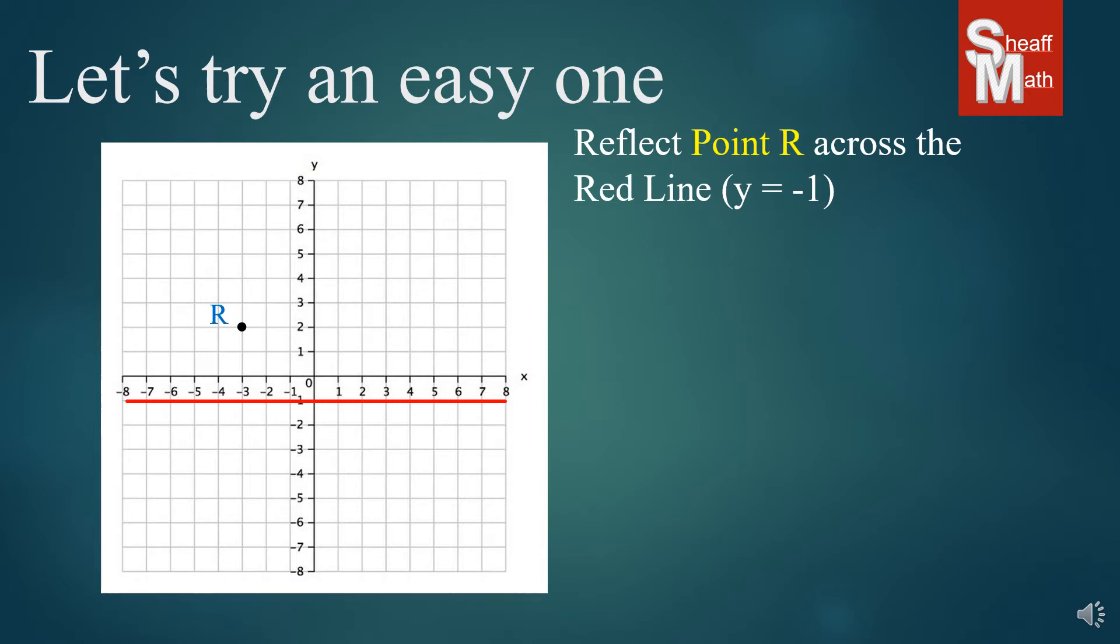So what we're going to need to do is to reflect this properly, we need to find out the exact distance that R is from the reflection line. And so it is exactly three units from there. So on the other side of the reflection line, we have to put the new point three units down. And so that is what we call R prime with a little apostrophe on it. And looking at the actual points, R is negative three two and it changes to R prime which is negative three negative four. So you notice the x didn't change at all but the y did.